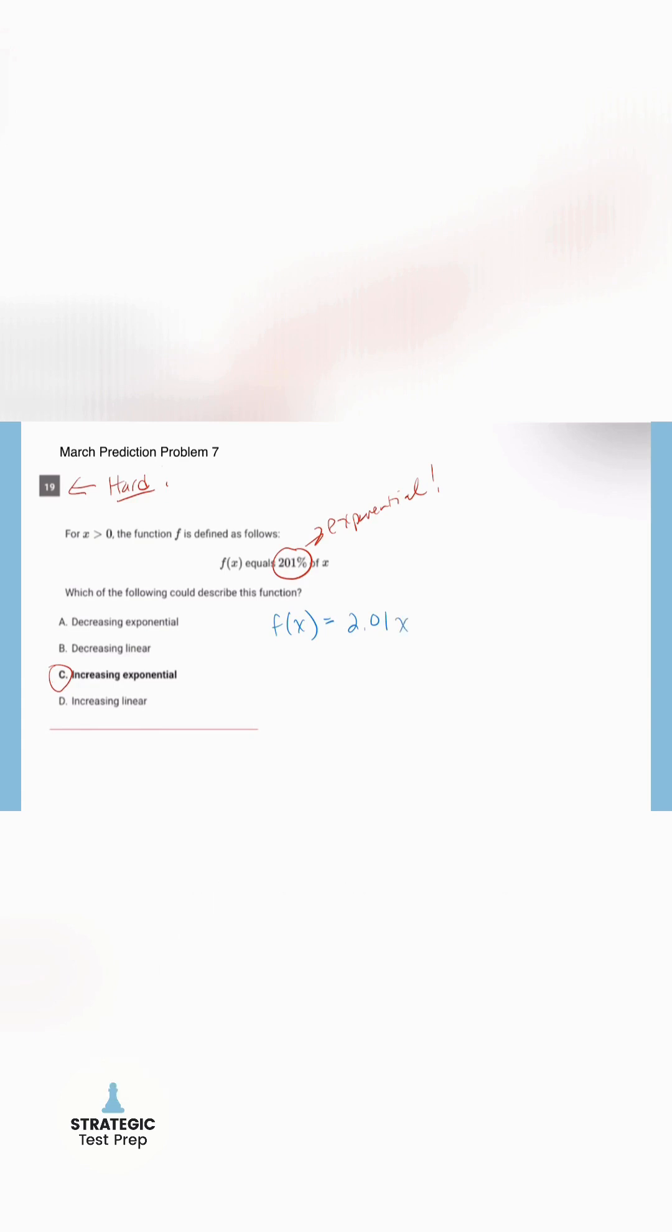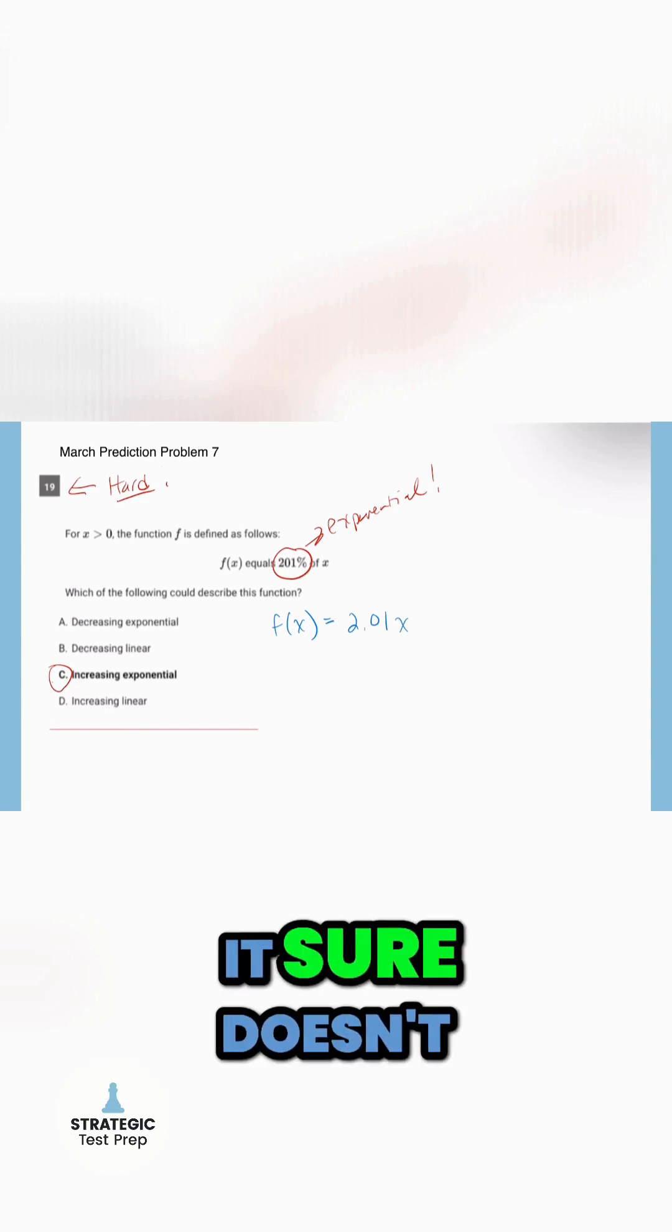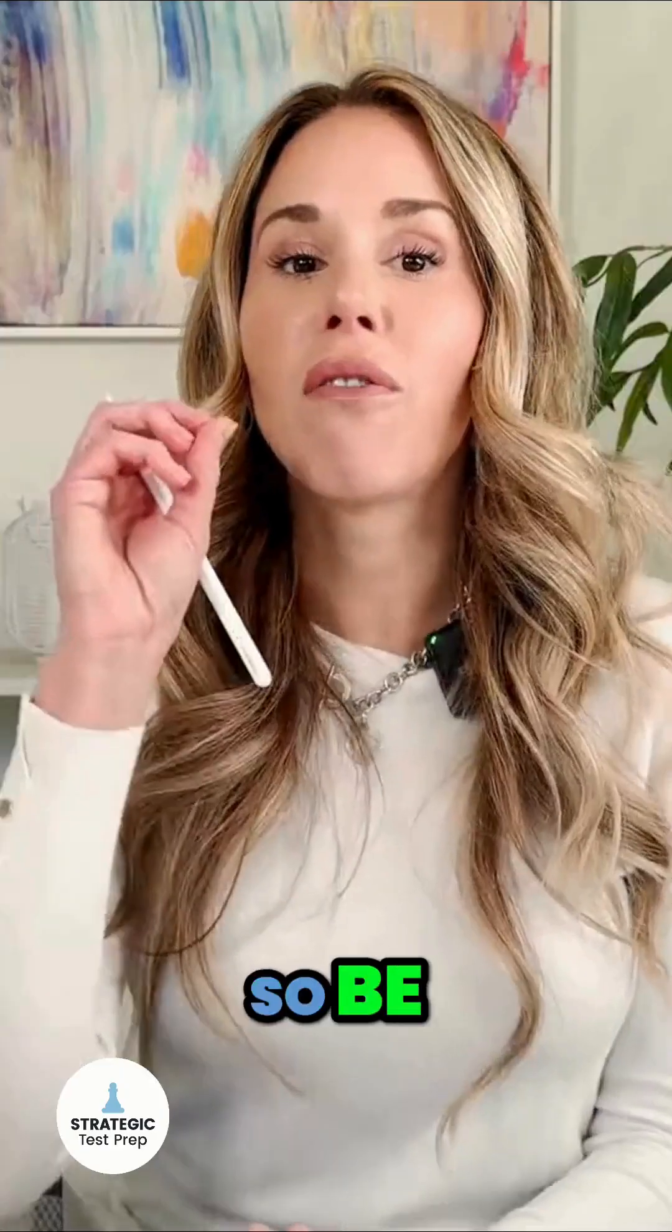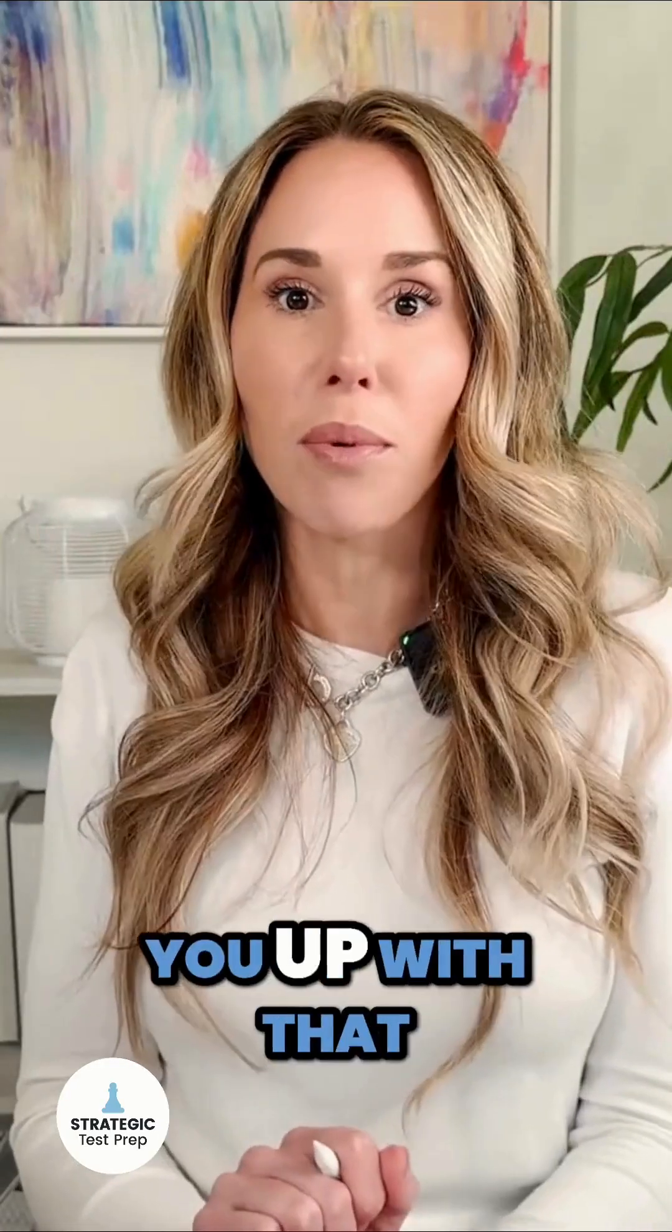Now look at it. Does that look exponential? It sure doesn't. That is linear with a slope of 2.01. So you have to pick D, increasing linear. So be very careful with those. They're going to try to trip you up with that.